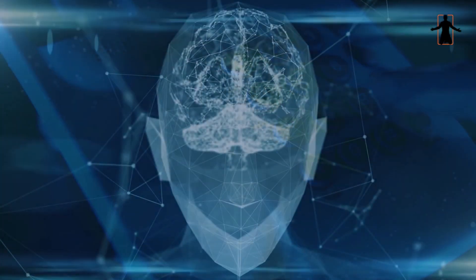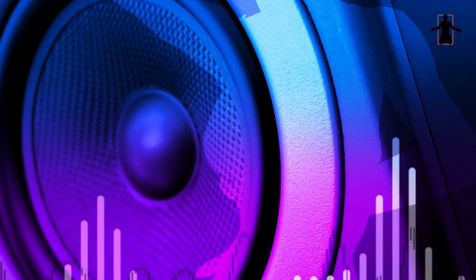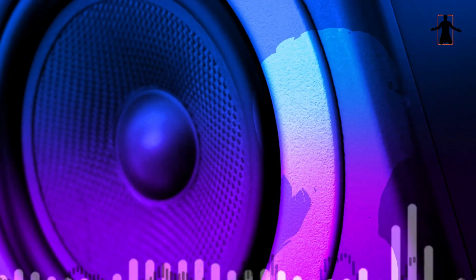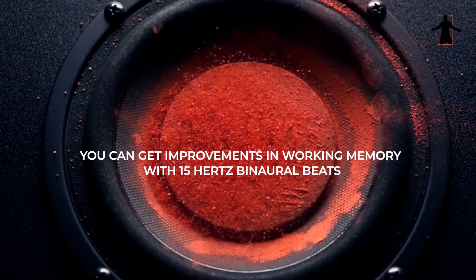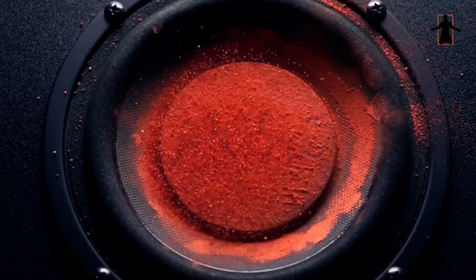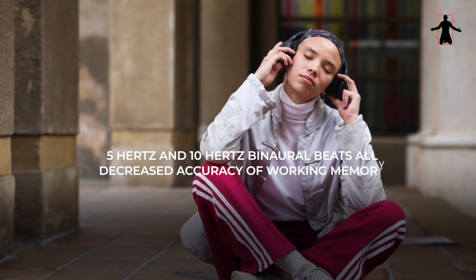Working memory is the kind of memory of remembering a phone number. If I say, for instance, 4932-931, and you have to remember that number, keeping it online is what we call your working memory. It's likely that you would forget that two or three days later. You can get improvements in working memory with 15 hertz binaural beats. Whereas the other control conditions, five hertz and 10 hertz binaural beats, all decreased accuracy of working memory.